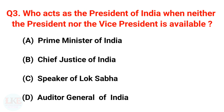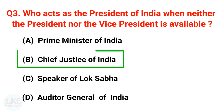Next question: Who acts as the President of India when neither the President nor the Vice President is available? The right answer is option B, the Chief Justice of India.